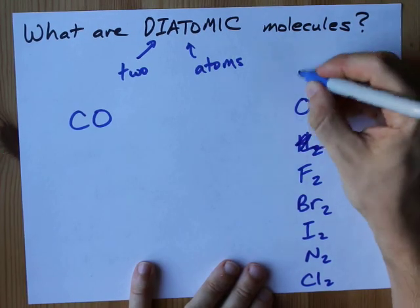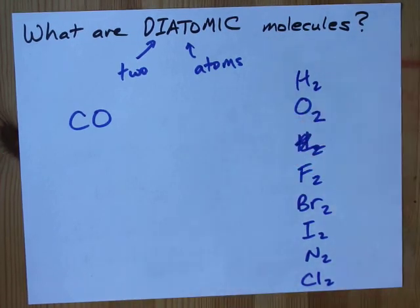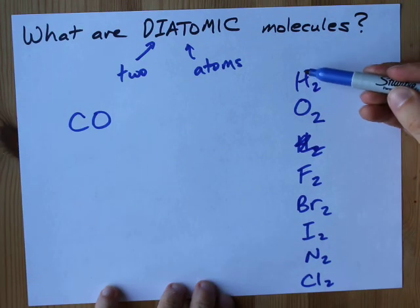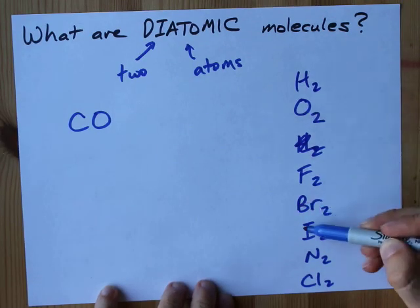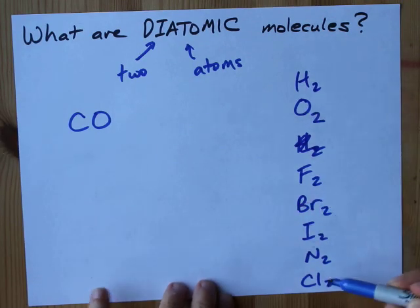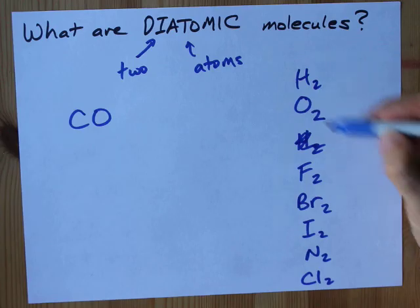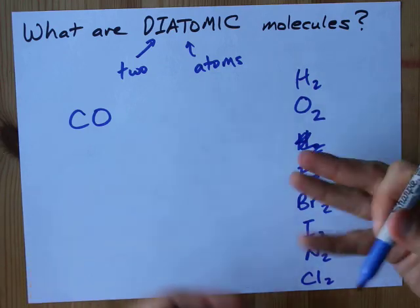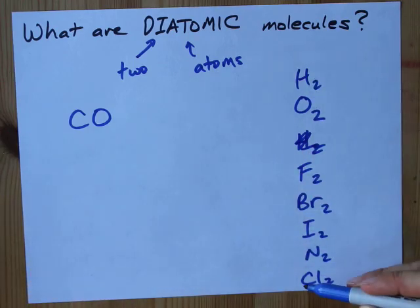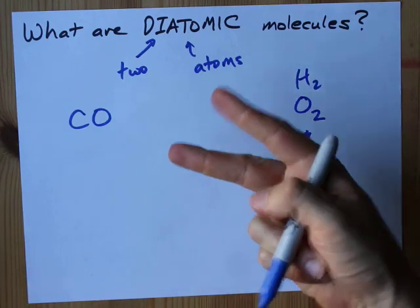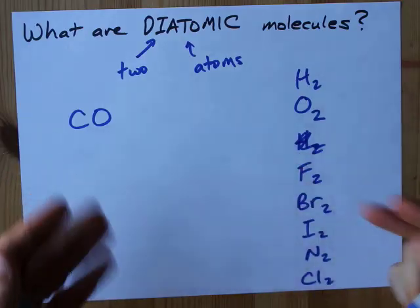I'm going to rewrite that one here and show you why we call it Hoffbrinkel. It's H-O-F-Brin-Kol — get it? Some people call it Hoberfinkel. These are diatomic molecules because there are two atoms in each.